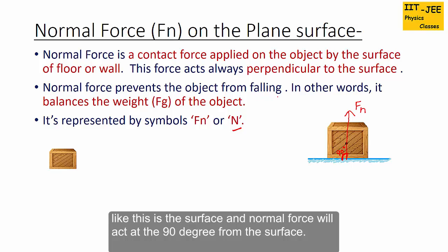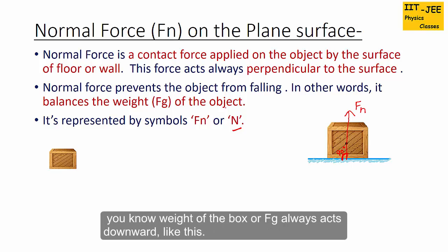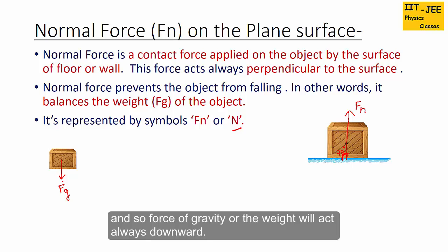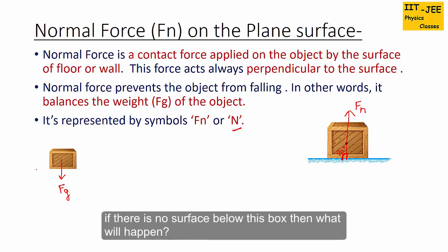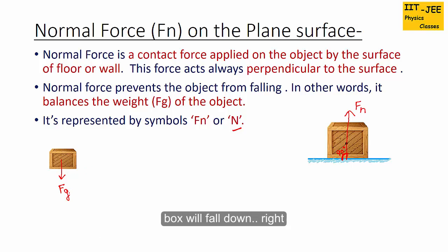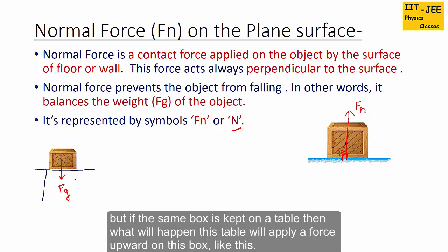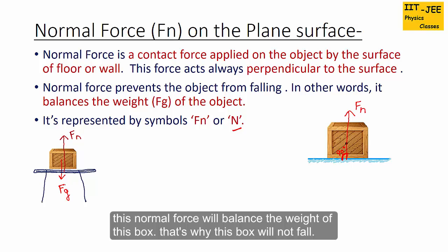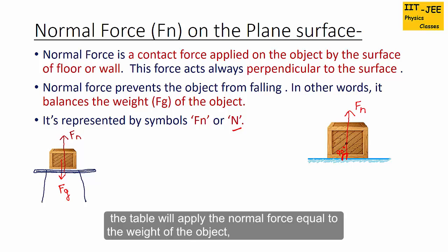Normal force prevents the object from falling — in other words, it balances the weight of the object. The weight of the box, or Fg, always acts downward. If there is no surface below this box, the box will fall down. But if the same box is kept on a table, the table will apply a force upward on this box. This upward force is called the normal force of the table, and it balances the weight of the box. The table applies a normal force equal to the weight of the object.